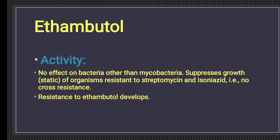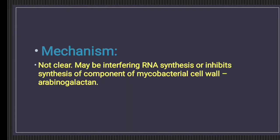Resistance to ethambutol can develop. Its mechanism of action is not entirely clear, but the known mechanism from different scientists and literature is that it inhibits the enzyme arabinosyl transferase, which is encoded on the embCAB operon gene. It inhibits arabinogalactan, which is an important component of the mycobacterial cell wall. Resistance develops when there is any change in the embCAB operon gene or any alteration of the enzyme arabinosyl transferase.